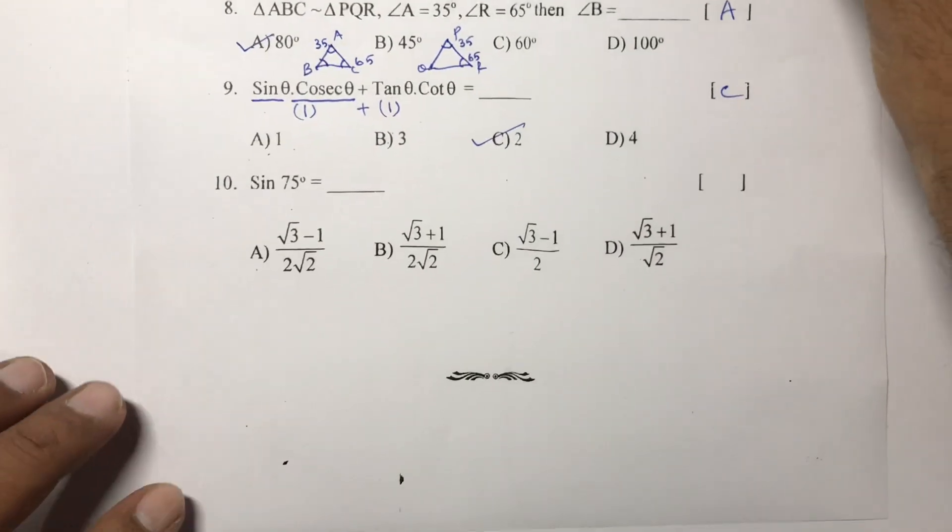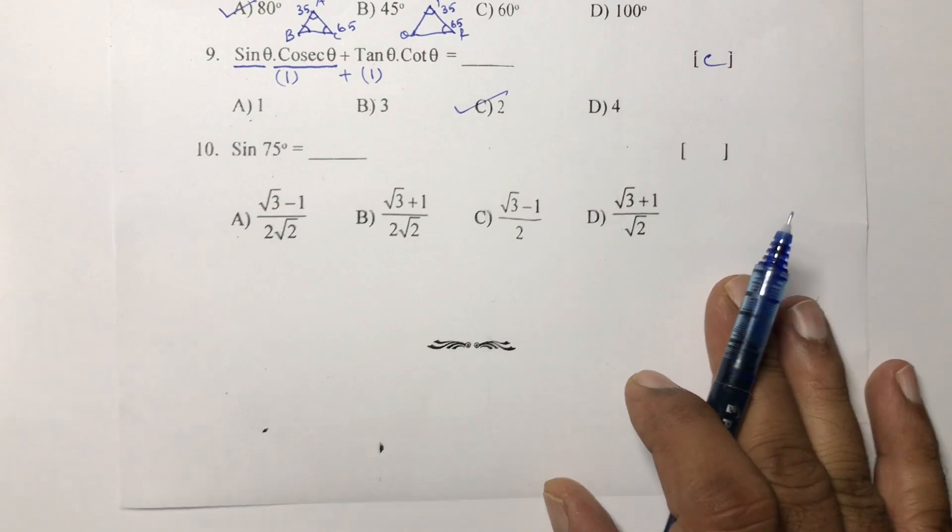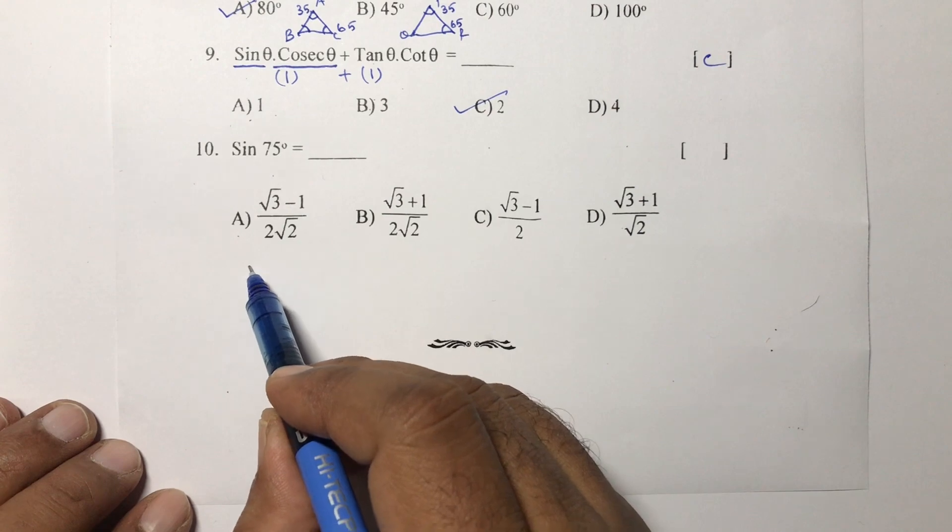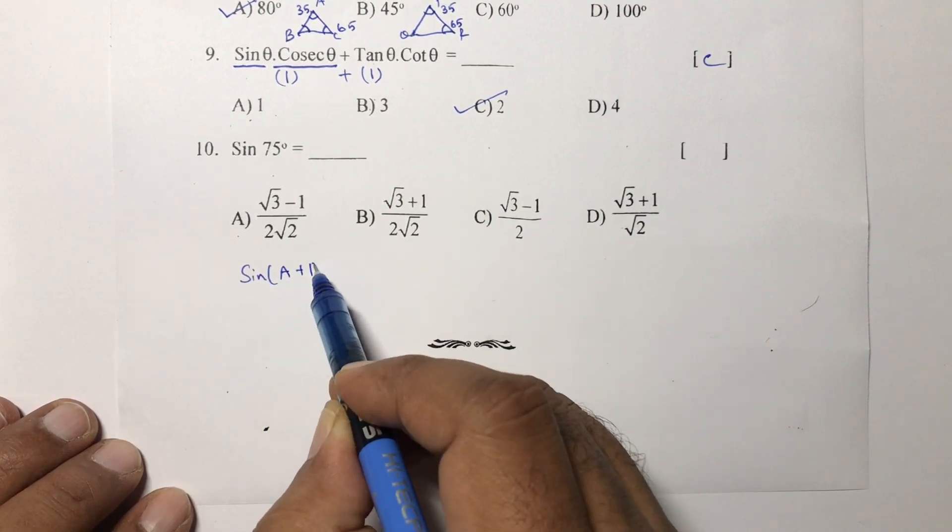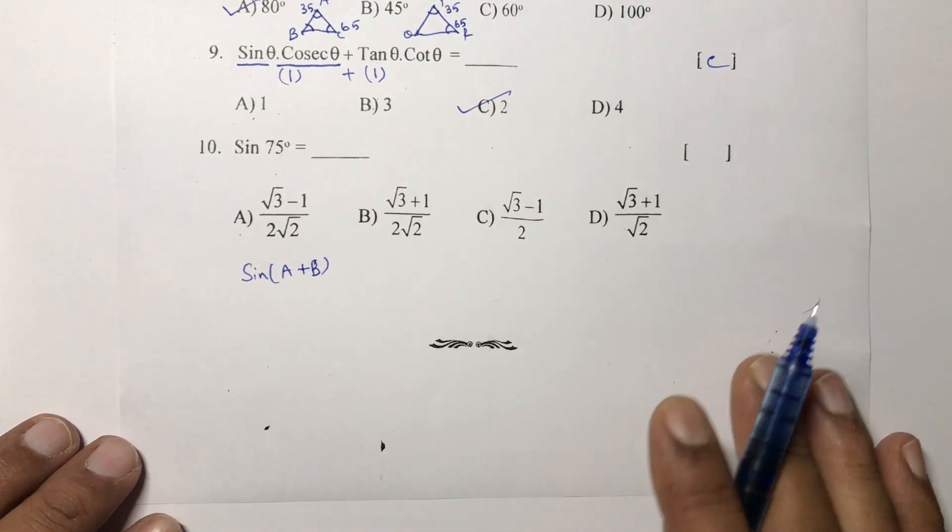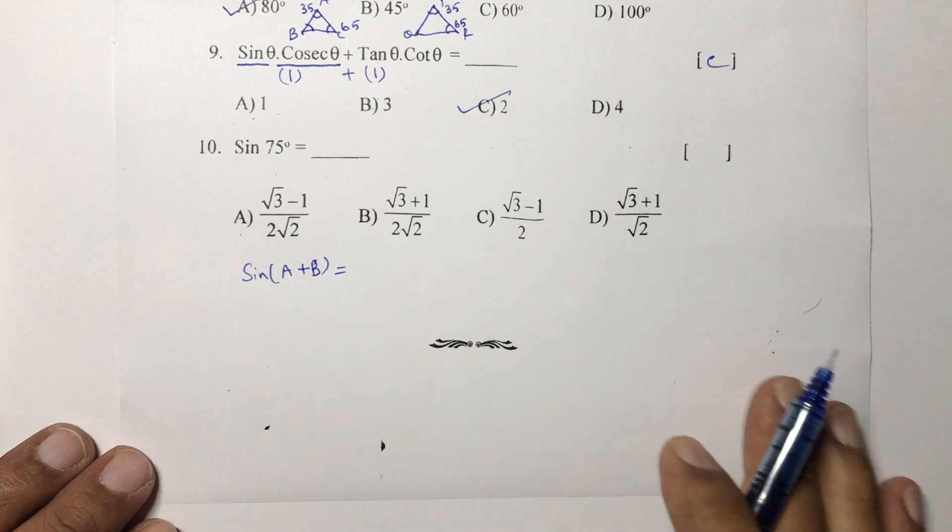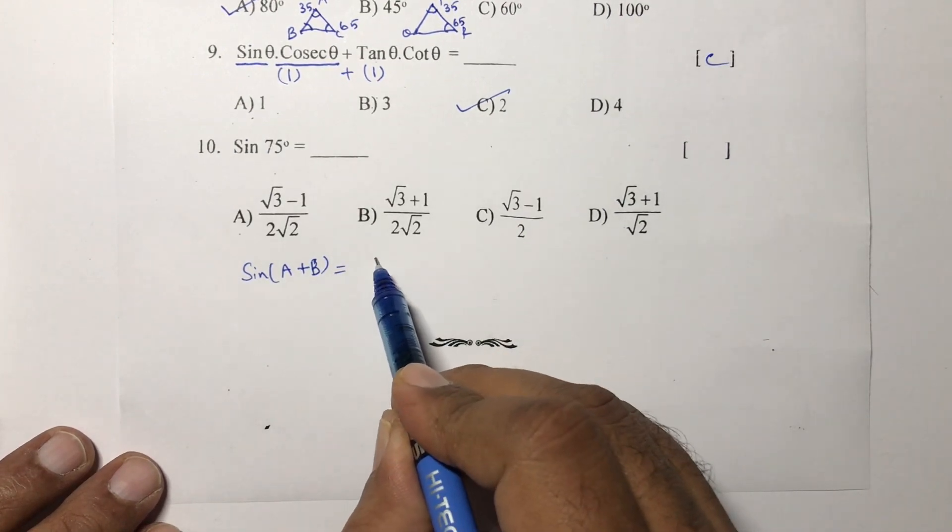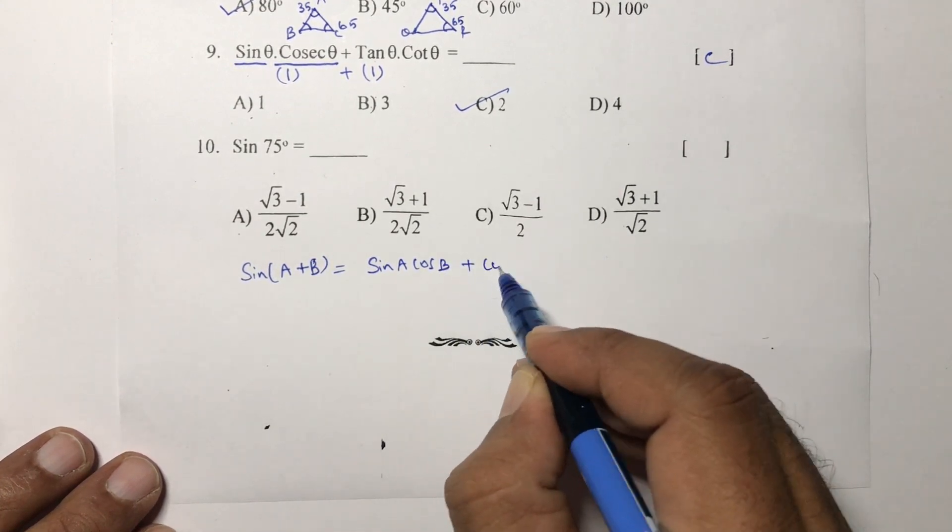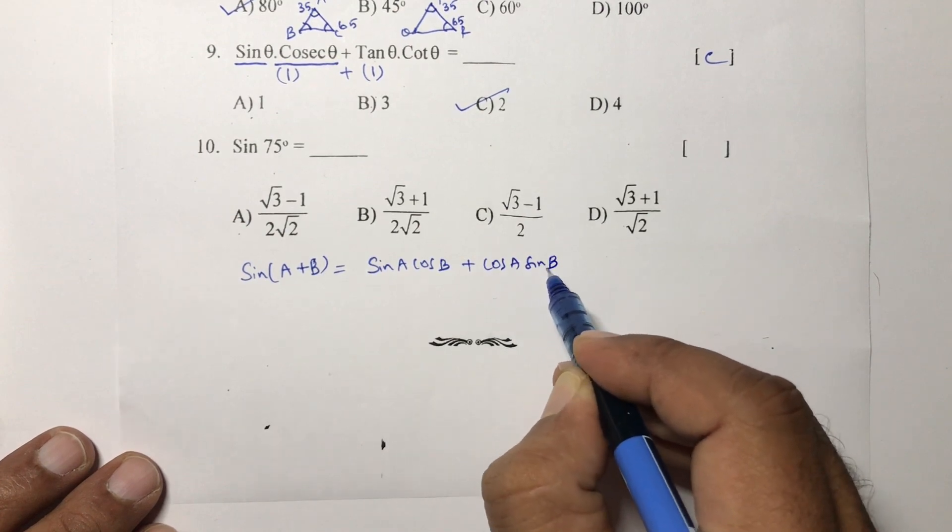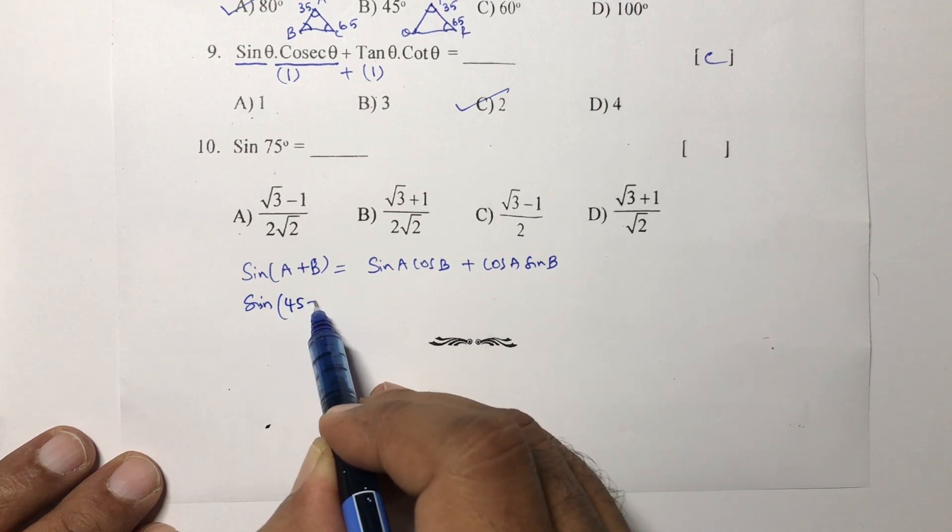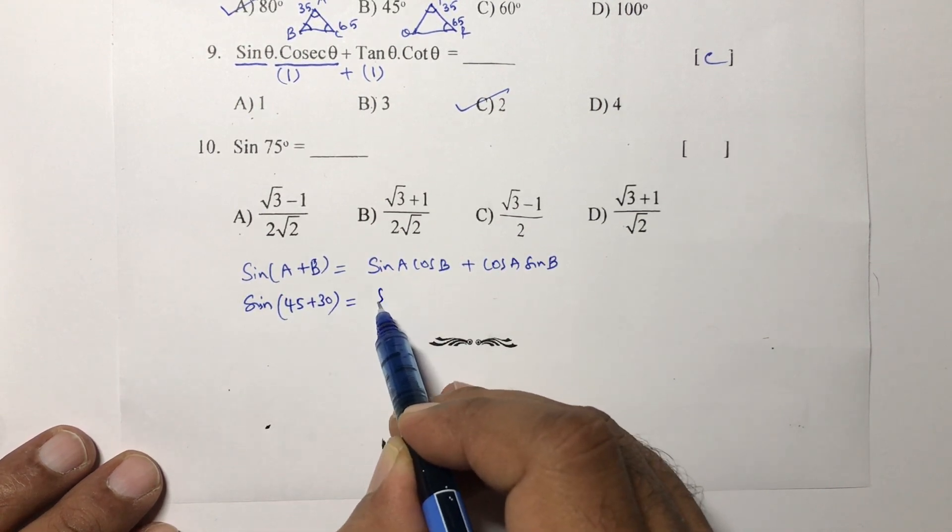Next, 10th question. Sin 75—for this we need to learn formula. Sin A plus B equals sin A cos B plus cos A sin B. Sin 75 we can write as sin 45 plus 30. A value is 45, B is 30. So sin 45 cos 30 plus cos 45 sin 30.